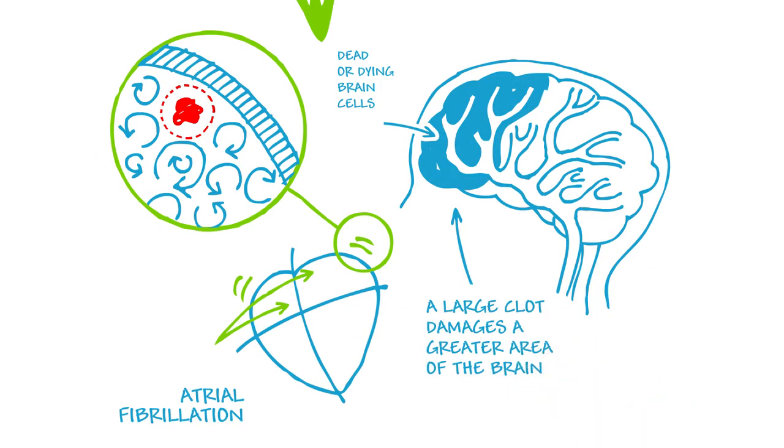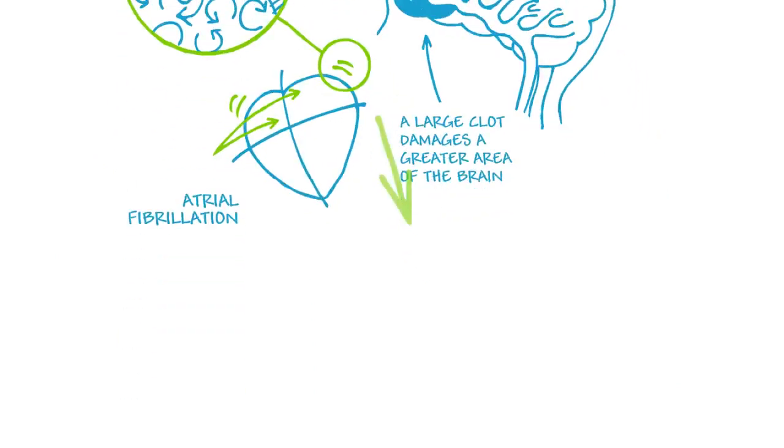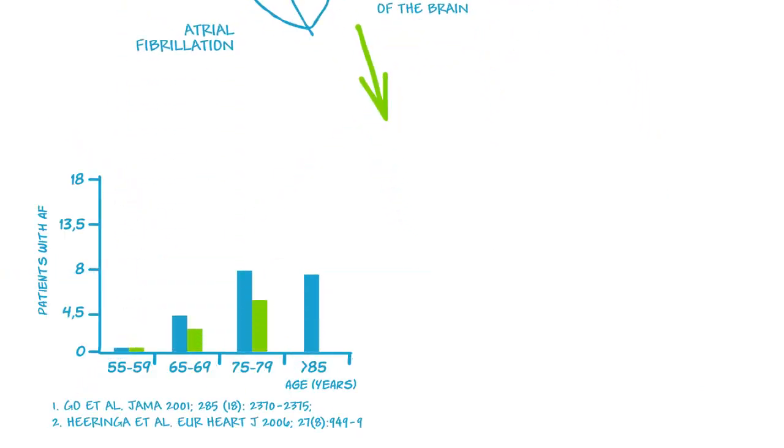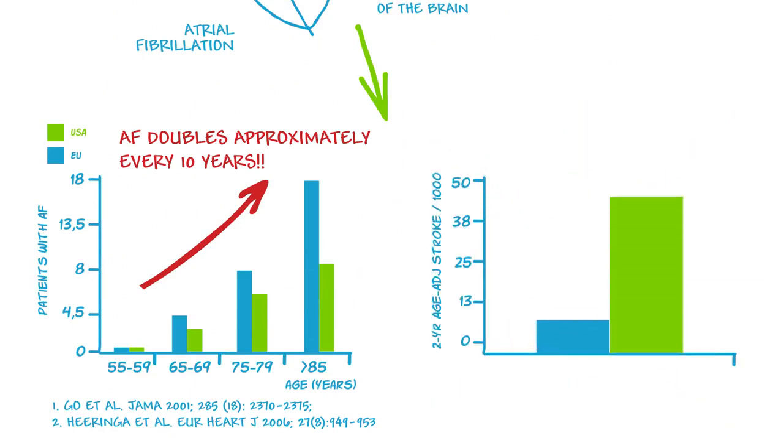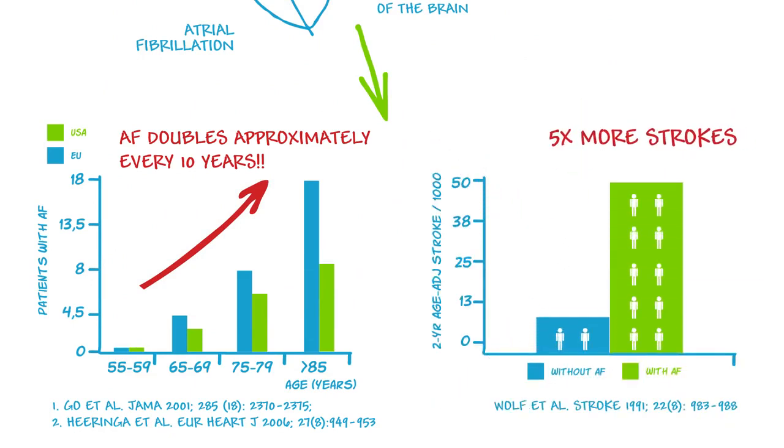The burden of death and disability arising from atrial fibrillation related stroke is appalling. In Europe and the USA, the number of people with AF approximately doubles every ten years after the age of 65. Patients with AF are four to five times more likely to suffer a stroke than patients without AF.